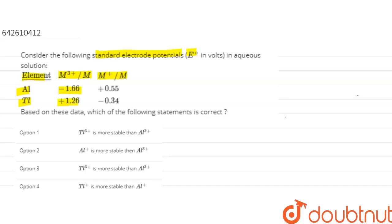And for thallium, the value is positive 1.26. M positive 1, the value for aluminum is plus 0.55 and for thallium minus 0.34. Now based on these data, which of the following statement is correct?